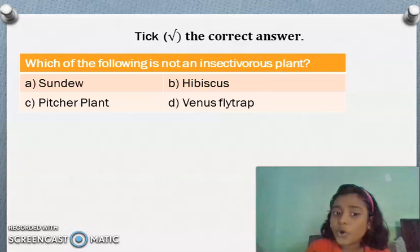Which of the following is not an insectivorous plant? Sundew, hibiscus, pitcher plant, venus fly trap. What is your answer? Yes, these sundew, pitcher plant, venus fly trap are insectivorous plants. But in this question they are asking not an insectivorous plant. So hibiscus is a flower, so it is not insectivorous plant. So we will put beside hibiscus tick mark.